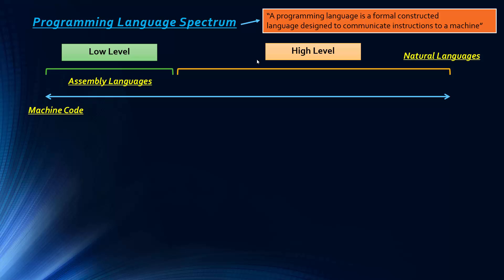At the very top of the spectrum we have natural languages — English, French, German. They're not programming languages, but they demonstrate the difference between machine code and natural languages. C++ might be considered slightly more low level than Python, and we also have pseudocode as a high level plan. You can see a progression from binary at one end to words at the other.